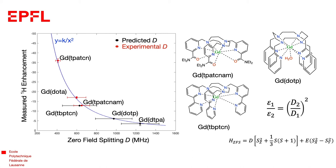It's worth mentioning that the ZFS D value of the new complex GAT3-TPA-TCM was obtained by simulating the Q-band field sweep at 10 Kelvin, which is seen on this graph.